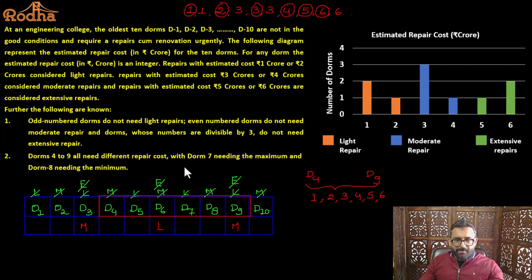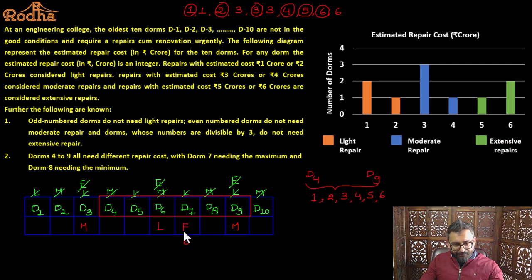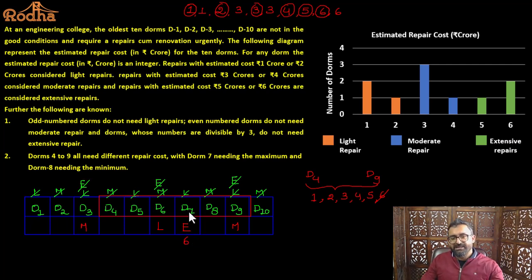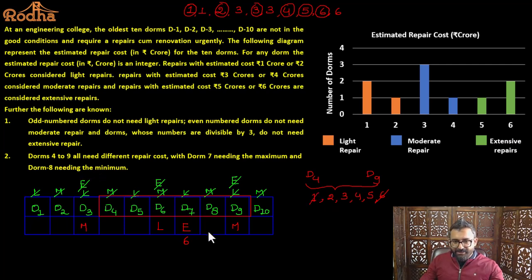DOM 7 needs the maximum repair cost, which is 6 crore, meaning it requires extensive repair. DOM 8 needs the minimum repair cost, which is 1 crore, meaning it requires light repair.